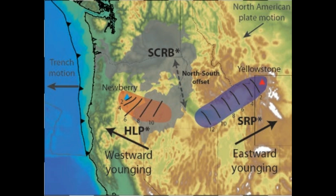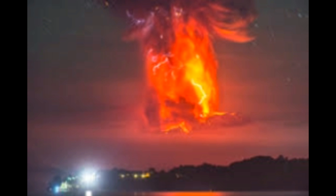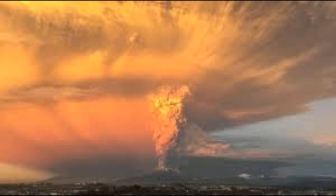To our 3D analog model, we added a fourth dimension — that is, time. We used a fiberglass plate to represent the Earth's subducting oceanic plate, and high-viscosity corn syrup to represent the Earth's mantle.